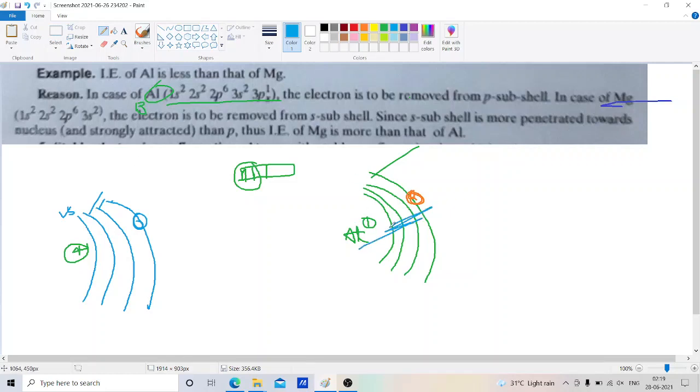In case of aluminum, we remove the electron from p subshell. But in case of magnesium, we remove the electron from s subshell. As we know, the s subshell is more penetrated towards the nucleus.